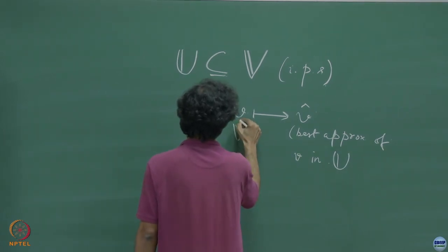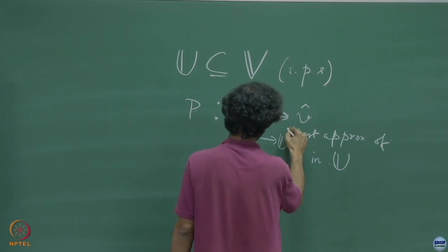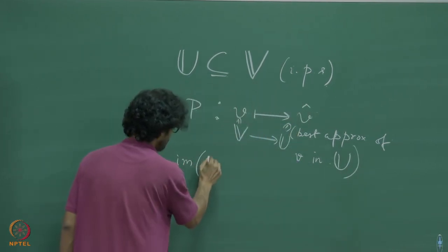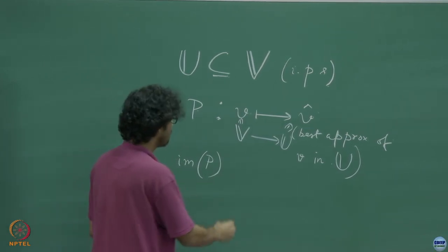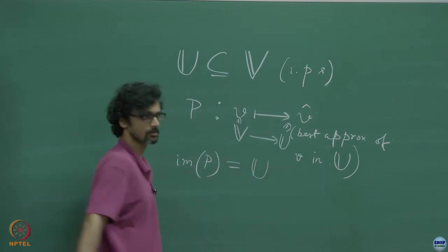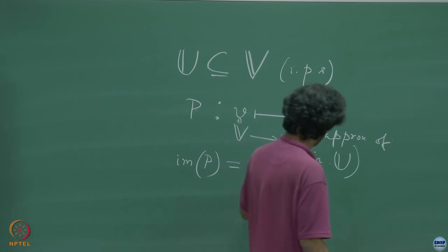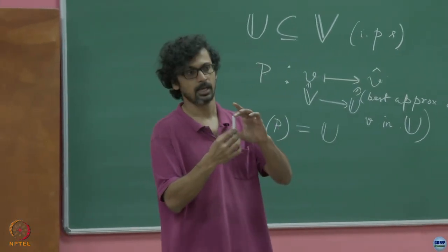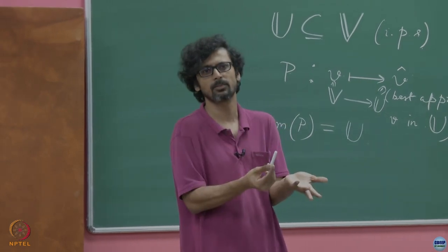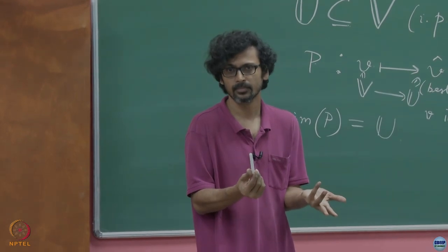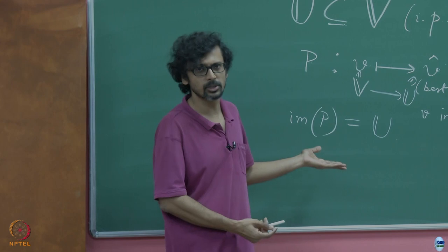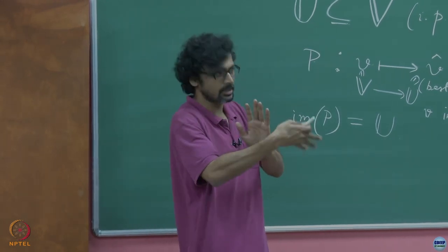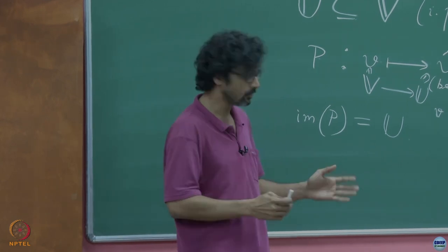This is a mapping from V to U. We have also shown that the image of this projection map is the entirety of U. Without loss of generality, if you pick any object in U, U is its own pre-image. If you try to project an object already sitting inside the subspace to get its best possible approximation within that same subspace, common sense says it must be the object itself. We proved this through the idea of best approximation using the inner product between the error and any vector in the subspace, where that inner product must vanish.